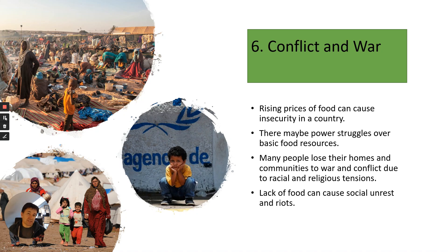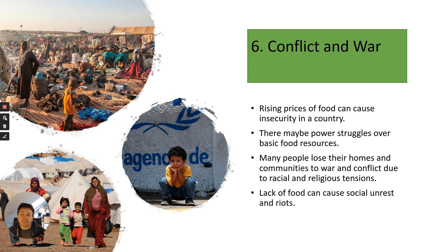Finally, conflict and war — which is more of a political, religious, and economic issue than a biological one. Rising prices of food in an area will cause conflict, because a lack of resources means people will fight for food, causing social unrest and riots. There may be power struggles over basic food resources. Many people lose their homes and communities and have to move from areas they call home due to conflict and racial and religious tensions, which all causes problems related to famine and lack of crops and livestock being grown.